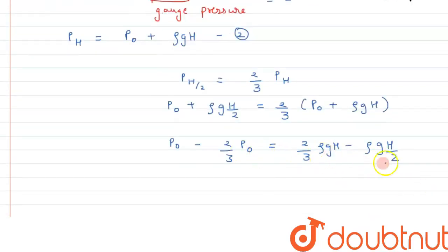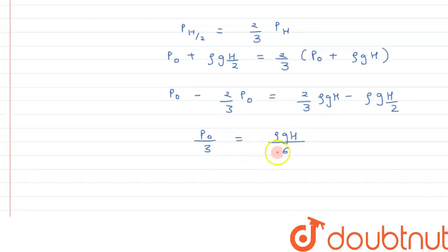Solving it further, we can write this as P₀/3, and here it can be written as 4 minus 3, that is ρgH/6. From here we have to substitute the value and we can calculate the value of H.